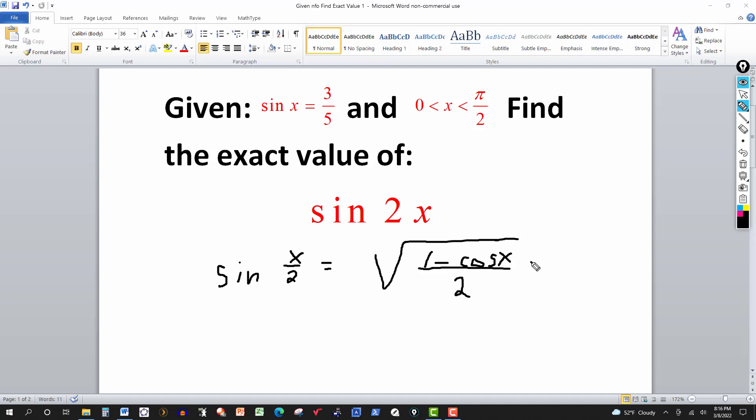So then we just say this is going to equal to 1 minus, and from the previous part, we got 4 fifths for the cosine of the angle, which is 4 fifths. That's over 2.